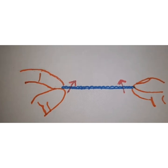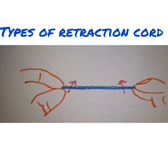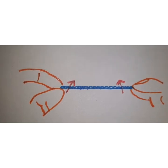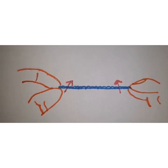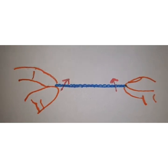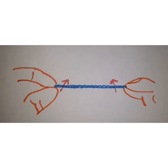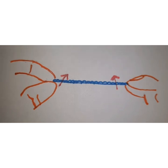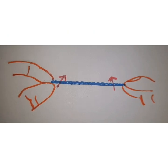The retraction cords are supplied in three basic designs: knitted, braided, or twisted. The type used depends on clinician preference and the specific situation. The largest cord that can adequately physically displace the gingiva should be selected. These chemicals impregnate the retraction cords to produce effective hemostasis in case of gingival bleeding. The criteria for selecting an appropriate retraction material are: it should be effective in displacing the gingiva and producing hemostasis.